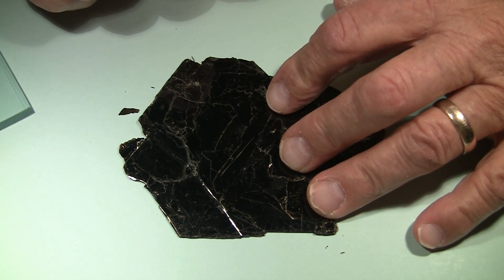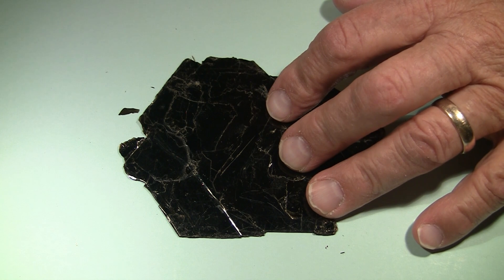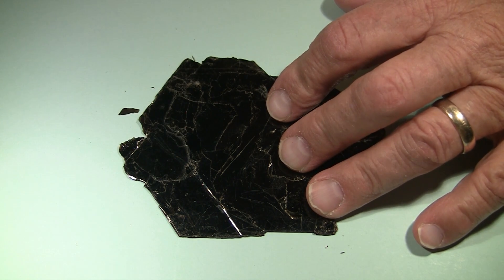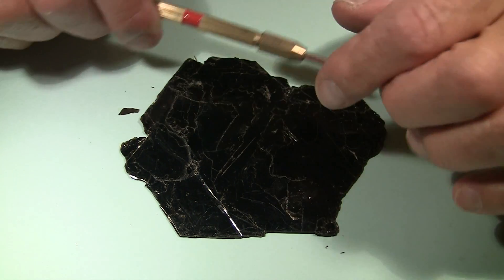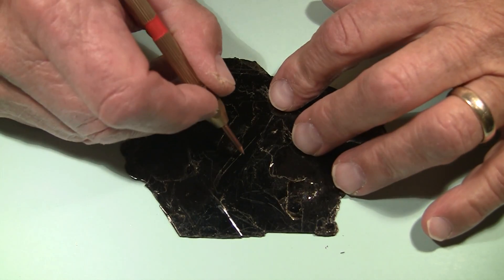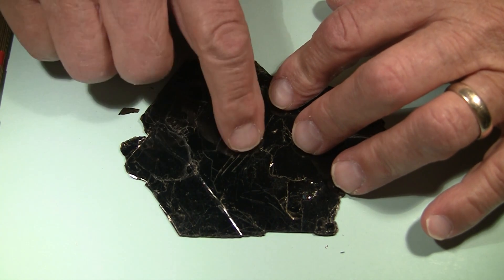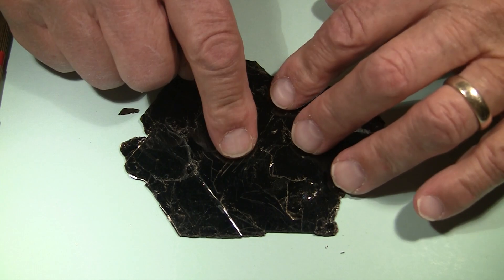Now let's see what else we can use to scratch it with. Hardness points here. Here is the number 3 hardness point, copper wire. And we'll rub that across there. I can definitely feel it scratching, leaving a mark as well.